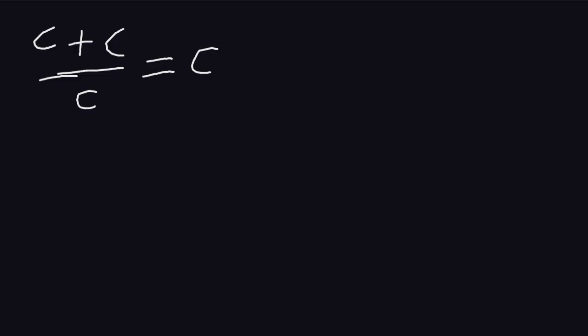So what are we going to do? The first step is to multiply both sides by c. We're going to have c plus c is equal to c multiplied by c, since if we multiply this side by c, we shall multiply this side by c also.